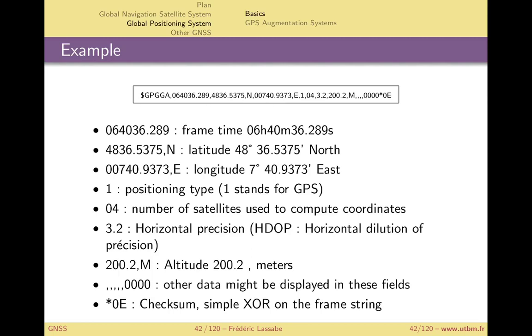Three dot two is the horizontal dilution of precision which is not very good. It's only four satellites.